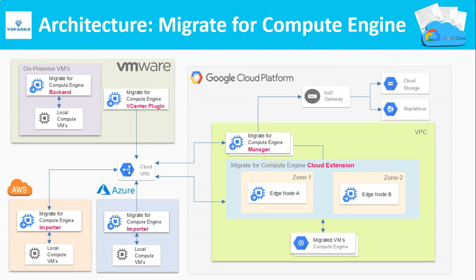Once you set up your source and destination for migration, you will be installing the Migration Manager from the marketplace. Migration Manager provides you a web UI to facilitate, manage and monitor the migration activities. These cloud extensions contain the actual worker nodes that do the actual migration and create the migrated VMs in Google Cloud Platform.